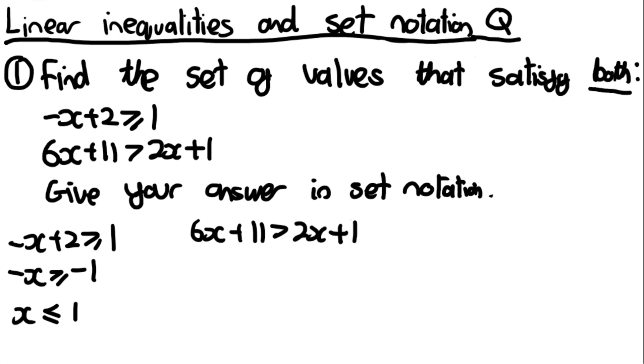So, we solve the second inequality which is 6x plus 11 is greater than 2x plus 1. We'll bring the 2x onto the other side to get 4x plus 11 is greater than 1. And then if we bring the 11 onto the other side, 4x is greater than minus 10. And then divide everything by 4 to get x is greater than minus 10 over 4 which is minus 5 over 2.